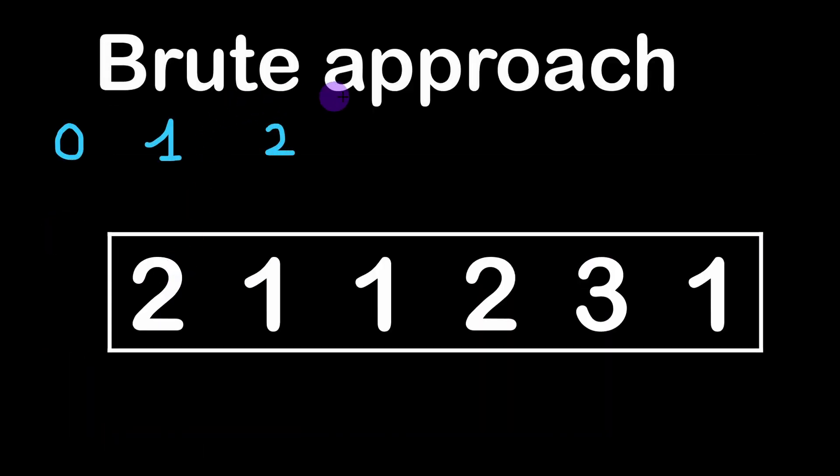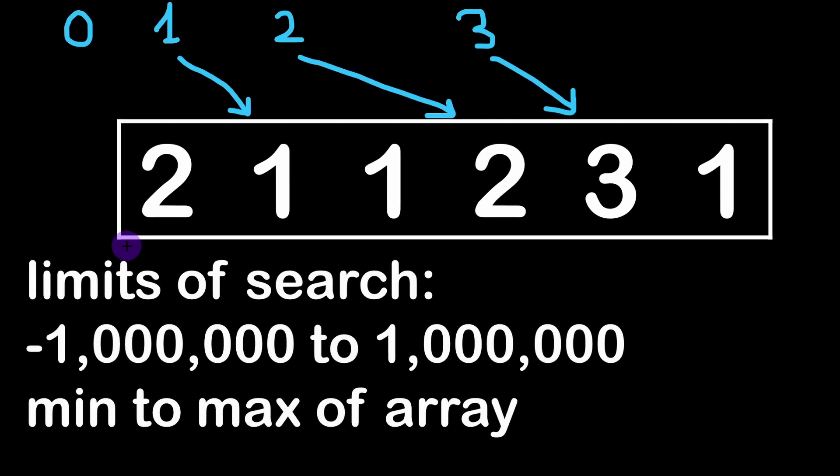So we can of course start using a brute force approach where I consider all the possible integers that might be in the array and I'm going to test each integer occurrence inside of the array. For example, we have no occurrence of the zero value, but then we have the number one, the number two, and the number three, so in total we have three different distinct values.